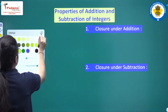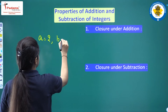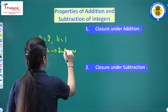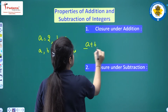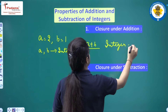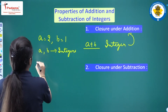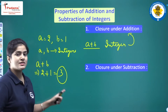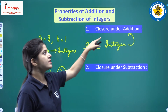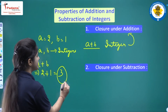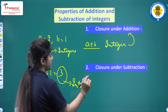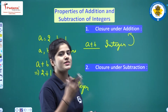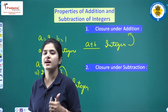If I am taking A equals 2 and B equals 1, both are integers. Then A plus B should also be an integer. A plus B, that is 2 plus 1, is equal to 3. Students, 3 is also an integer. So this is what closure property means — A is an integer, B is an integer, and their sum A plus B equals 3 is also an integer.